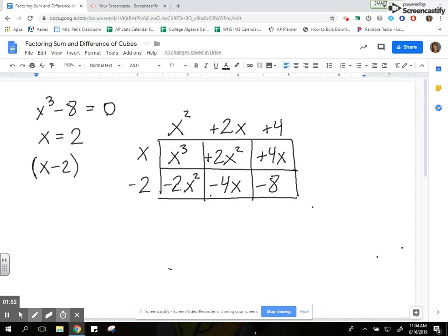And now my box is complete, which means x cubed minus 8 can be rewritten with the factors x minus 2 and x squared plus 2 x plus 4.